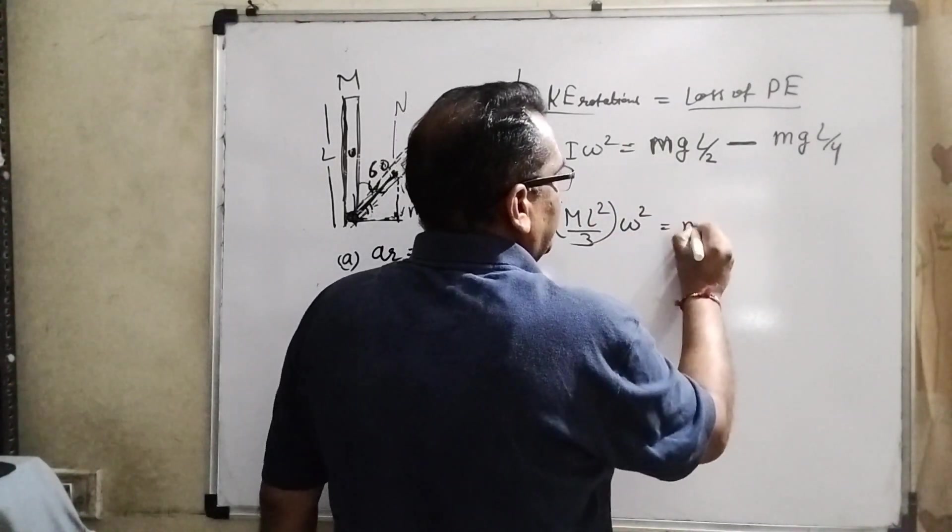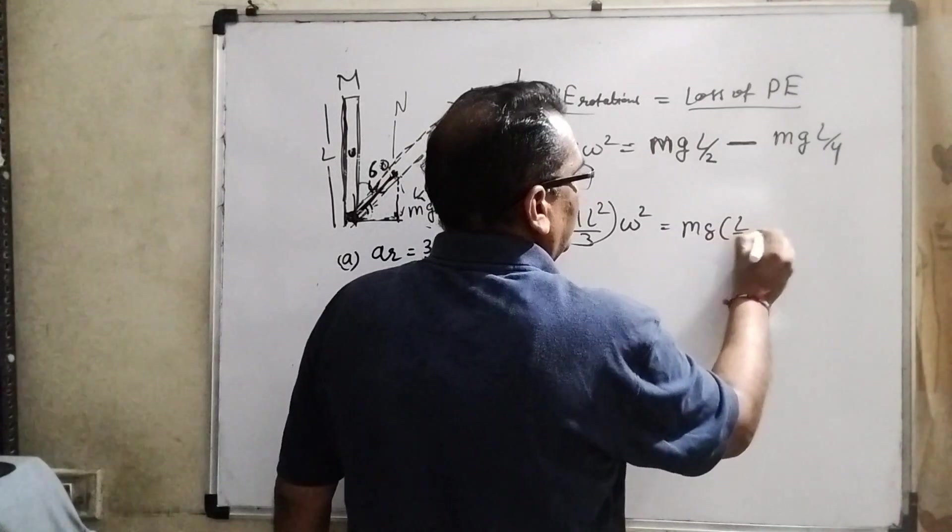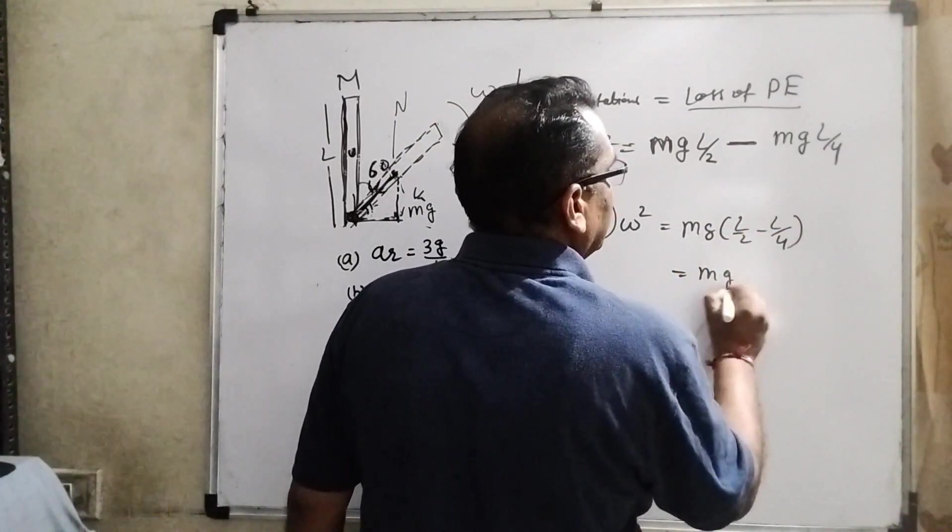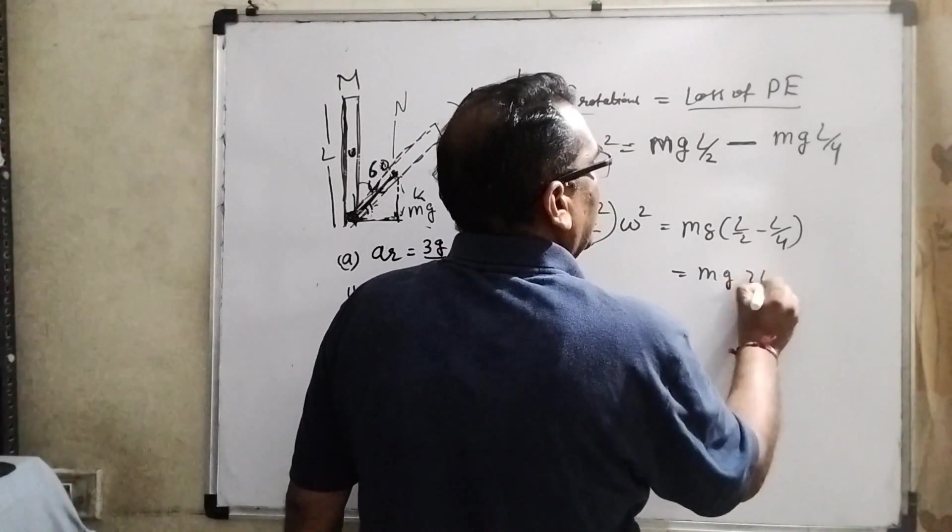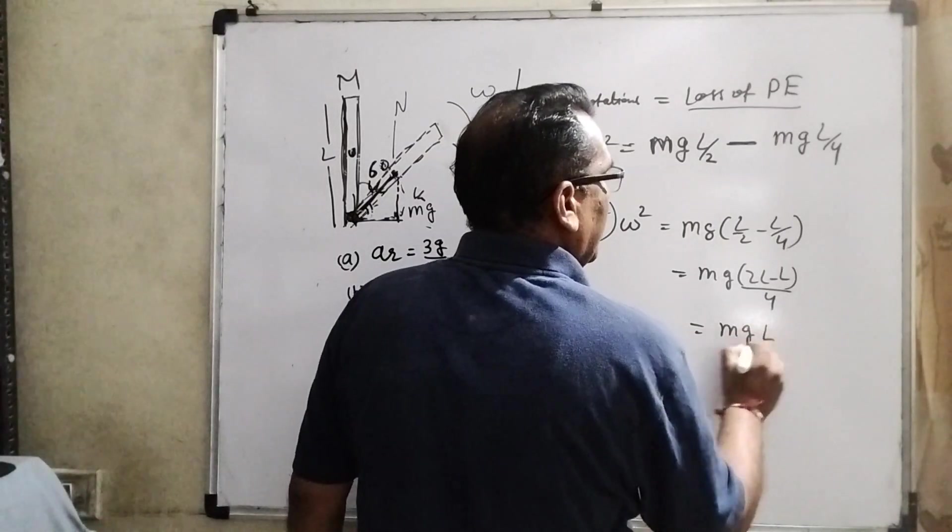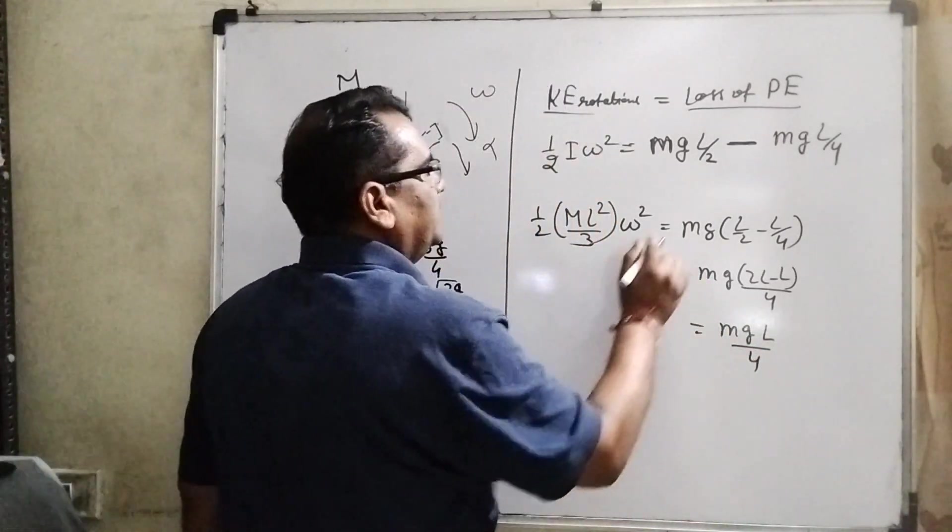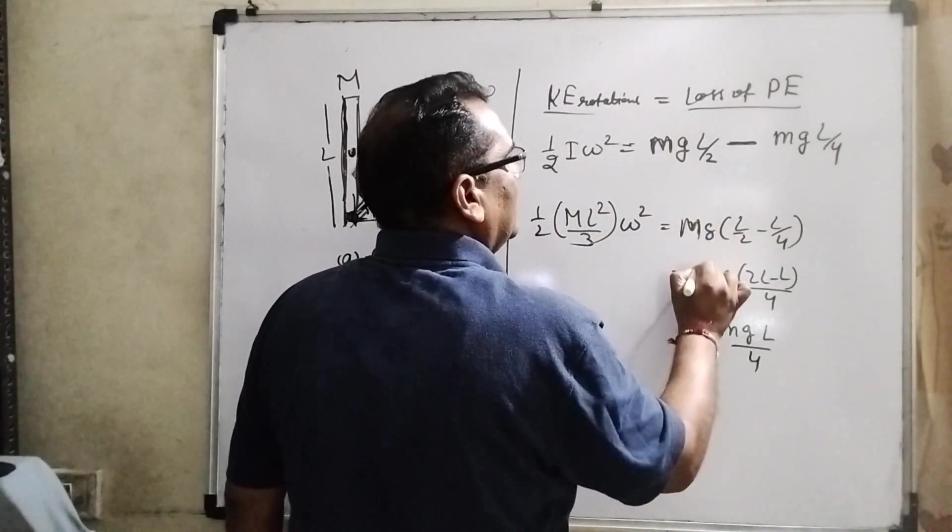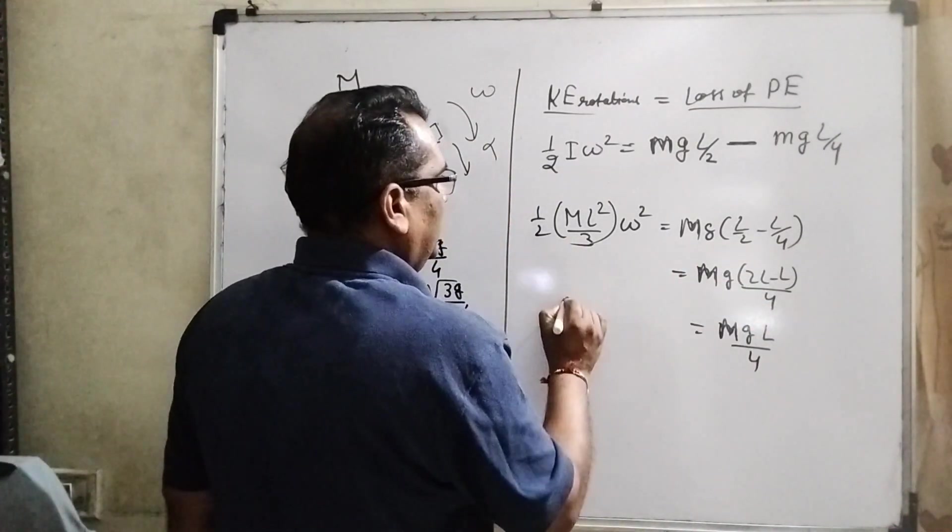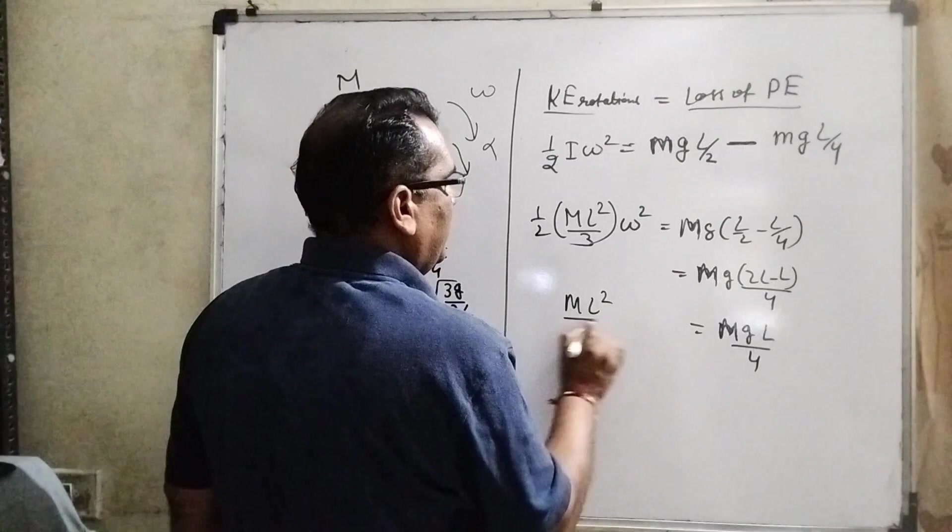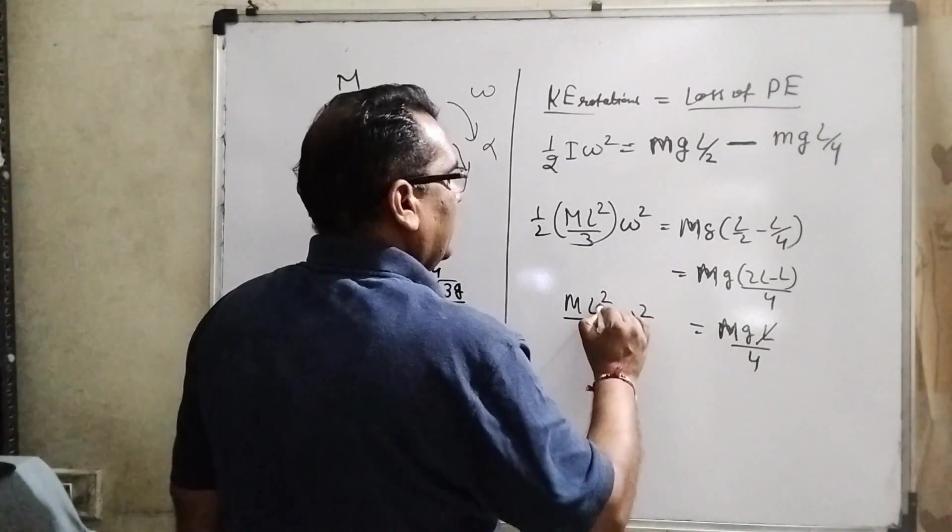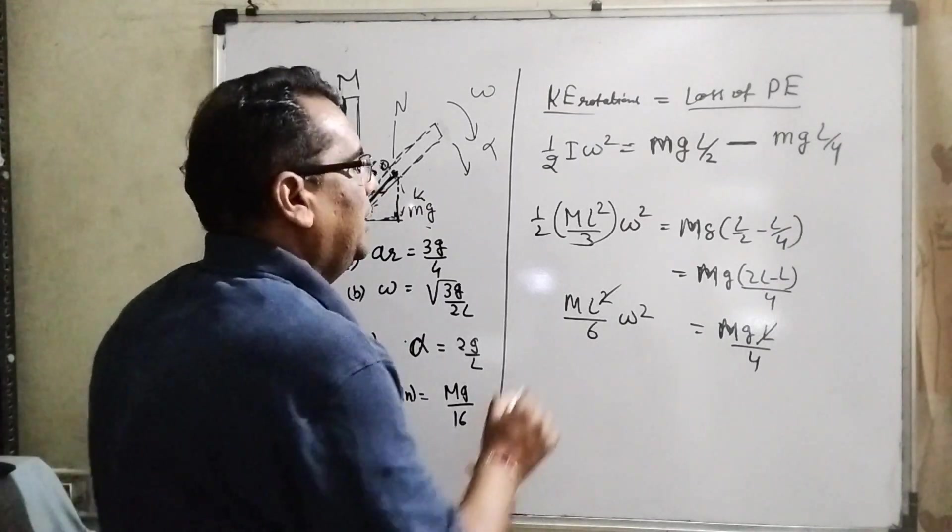And at the center you are well known that M L squared by 12. So here at the center, but here we have to use M L squared by 3 and omega squared. What is M g? Get common. Then M g get common, then L by 2 minus L by 4.